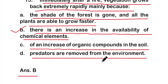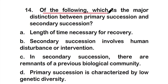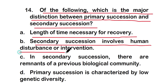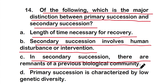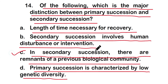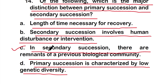Question number fourteen: Which is the major distinction between primary succession and secondary succession? Options: option A: length of time necessary for recovery; option B: secondary succession involves human disturbance or intervention; option C: in secondary succession there are remnants of a previous biological community; or option D: primary succession is characterized by low genetic diversity. The right answer is option C — in secondary succession there are remnants of a previous biological community.